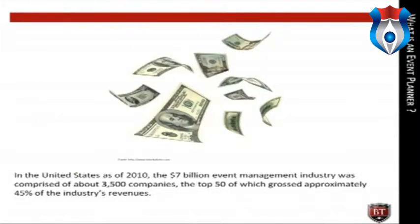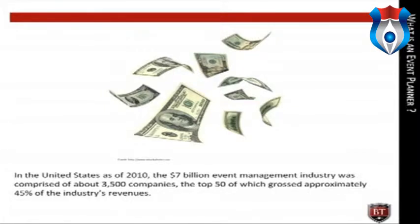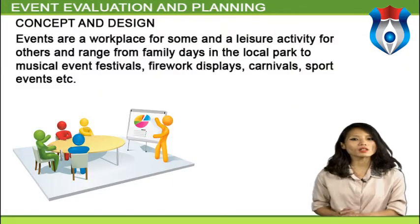The event management industry is highly competitive. In the United States as of 2010, the $7 billion event management industry was comprised of about 3,500 companies, the top 50 of which grossed approximately 45% of the industry's revenues. The U.S. Bureau of Labor Statistics indicates that the industry will grow 16% in the next decade and employ approximately 66,000 meeting and convention planners by 2018. By 2005, the wedding planning industry was about 15,000 people strong, with steady growth indicated.